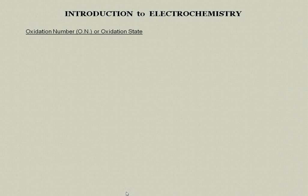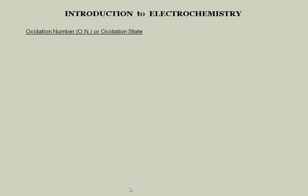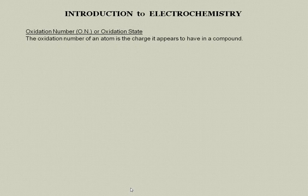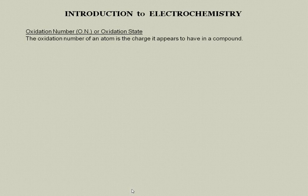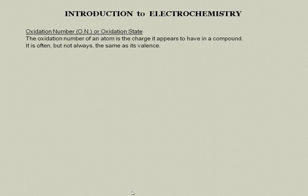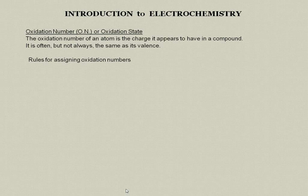The first terms that we're going to look at are oxidation number or oxidation state. They both mean essentially the same thing. The oxidation number of an atom is the charge it appears to have in a compound. It is often but not always the same as its valence.